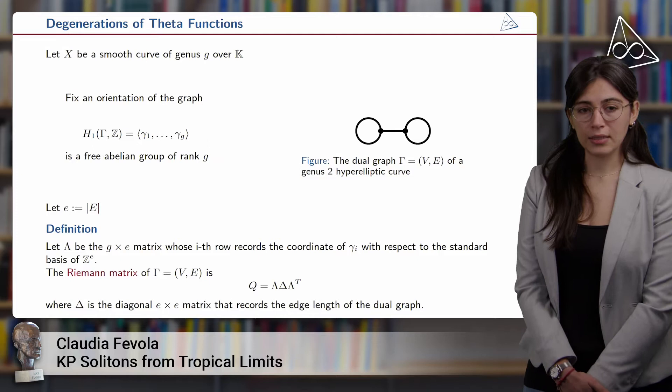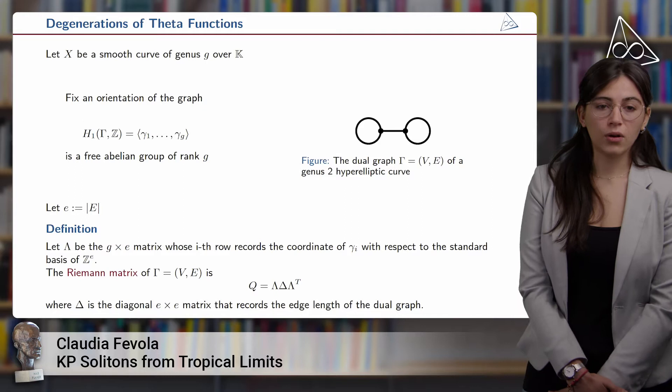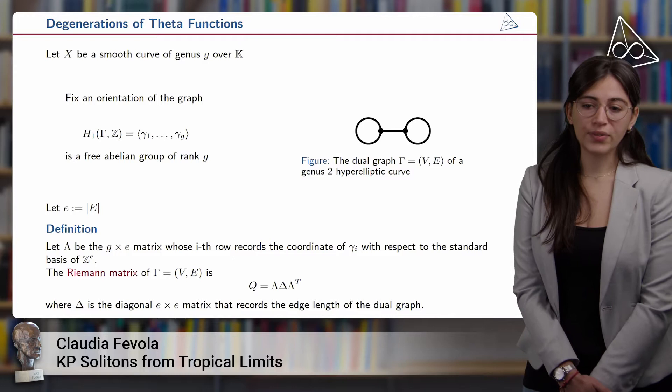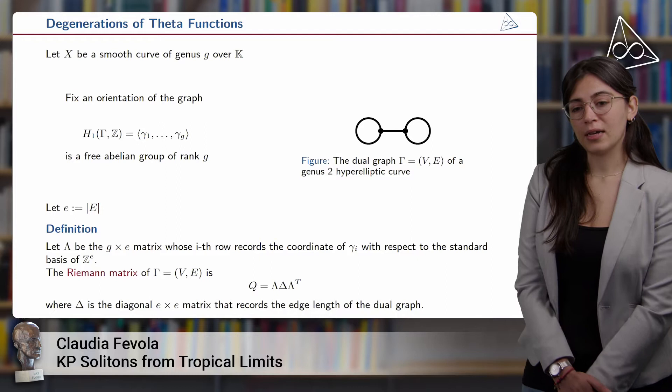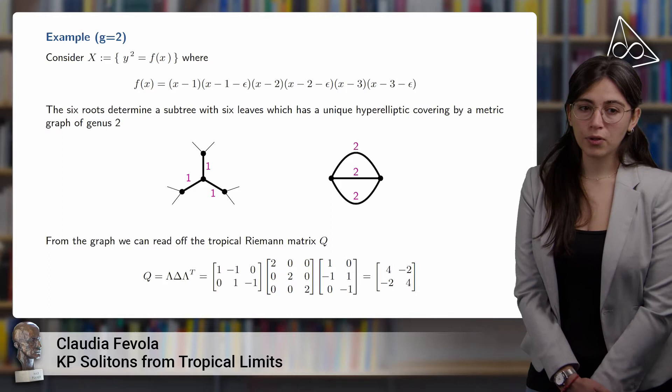If E is the number of edges in the graph, we define the matrix lambda to be the G-by-E matrix whose each row records the coordinates of each gamma_i with respect to the standard basis of Z^E. The Riemann matrix of this graph is then given by the product of lambda with delta and lambda transposed, where delta is the diagonal E-by-E matrix recording the edge lengths of this dual graph.